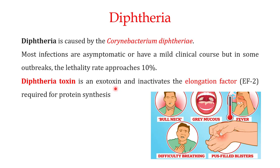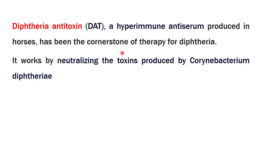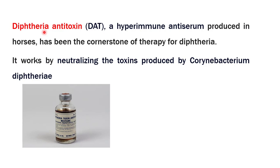The diphtheria toxin is an exotoxin, meaning it is released into the environment. What it does is inactivate elongation factor 2, which is very important for the synthesis of proteins. If protein synthesis is blocked in the cell, the end result is that the cell dies. What you can do is use the diphtheria antitoxin, which is a hyperimmune anti-serum produced in horses and is the cornerstone of therapy for diphtheria. This antitoxin neutralizes the diphtheria toxin so that elongation factor 2 can perform its function and protein synthesis is restored, preventing cell death.